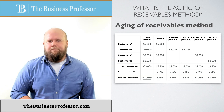Each receivable is classified by how long it has passed its due date. An estimated percentage of uncollectibles is then assigned to each classification, with each one having its own respective percentage, and then totaled to get the allowance for doubtful accounts balance. This is telling us the end result is the allowance for doubtful accounts balance, so we need to subtract that from what we already had in there to figure out what we need to put in the adjusting entry.